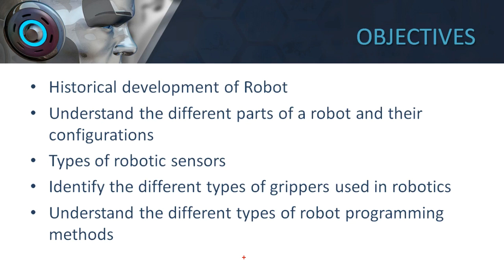We'll be understanding the different types of robot programming methods — how do you program a robot, and how does a robot work based on human instructions. You need to make the robot understand what it needs to do, and for that you require robot programming.